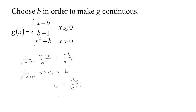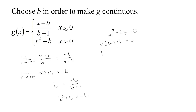In order for the limit to exist, these would have to be equal. So b would have to equal negative b over b plus 1. Multiplying both sides by b plus 1: b times b plus 1 is b squared plus b, and on the right we get negative b. So we get b squared plus 2b equals 0.